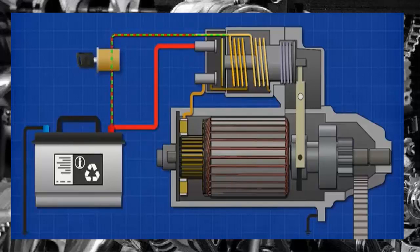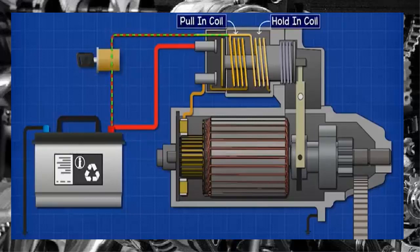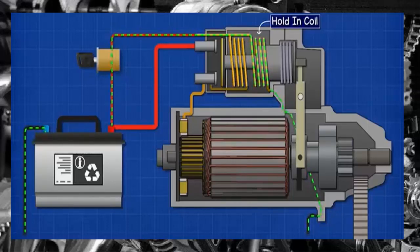The solenoid is usually made of two coils, known as the pulling coil and the holding coil. The end of the holding coil connects to the casing of the starter motor, so the current returns to the battery via the frame of the car.